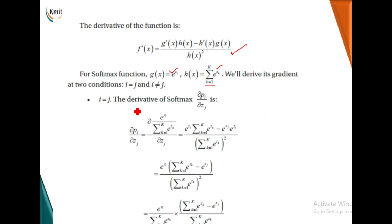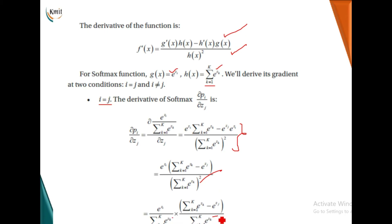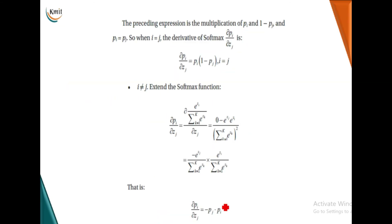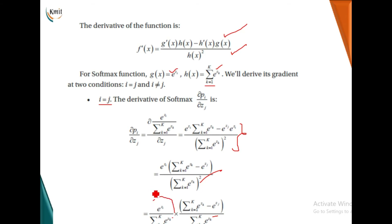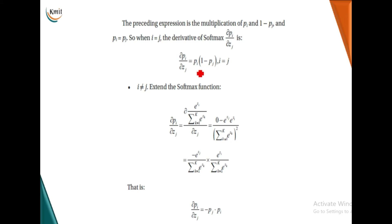Because of the summation, we must derive the softmax gradient for two conditions: when i and j are equal, and when they are not. Substituting into the quotient rule formula f'(x) = [g'(x)·h(x) − h'(x)·g(x)] / h(x)², we factor out e to the power z_i. Rearranging, we observe that one term is p and the other is 1 minus p, giving us p(i) times (1 minus p(j)) for the case when i equals j.